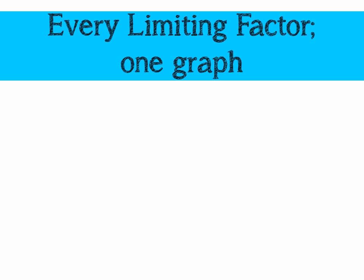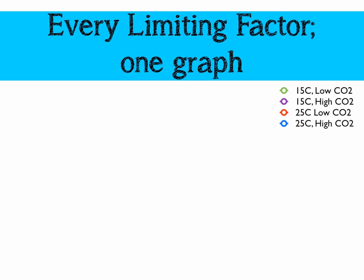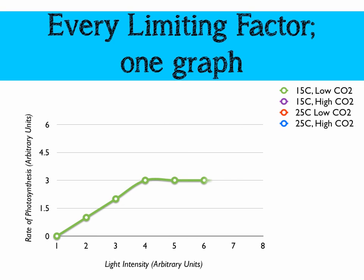We can look at all three limiting factors on one graph. We're going to have four lines: one at 15°C with low CO2, one at 15°C with high CO2, one at 25°C with low CO2, and one at 25°C with high CO2. Along the x-axis we're going to have light intensity. All of the lines show a similar pattern, with the 25°C high CO2 line being the highest and 15°C low CO2 being the lowest.